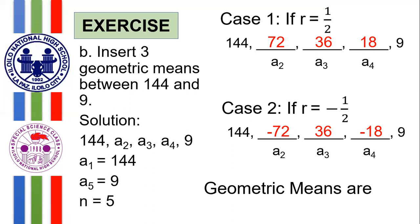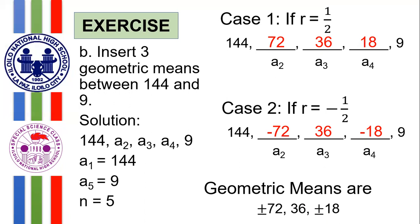If you answered case 1 and case 2 separately, that is considered correct. You should not include 144 and 9 as geometric means. You may also write them as a single expression, since the terms have the same absolute values but differ in signs. The first terms are ±72, the middle term is 36 in both cases, and the last terms are ±18. Hence, the geometric means are ±72, 36, and ±18.